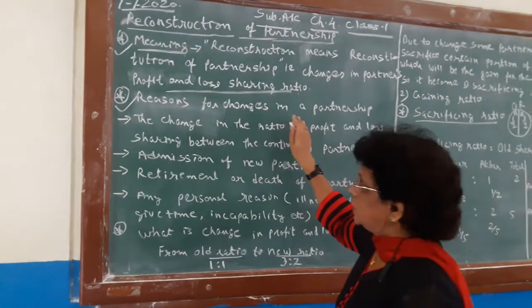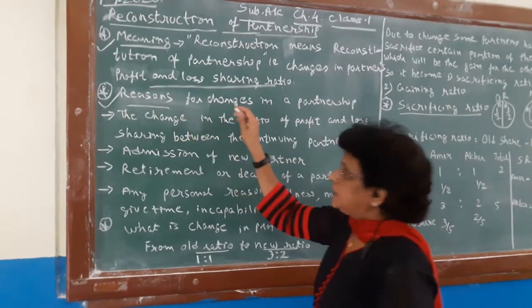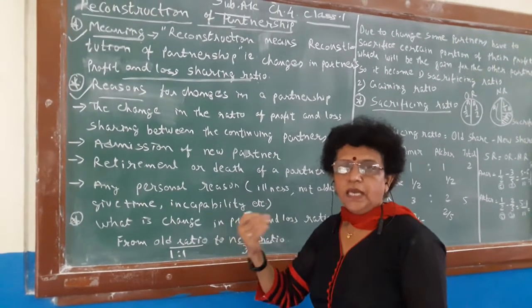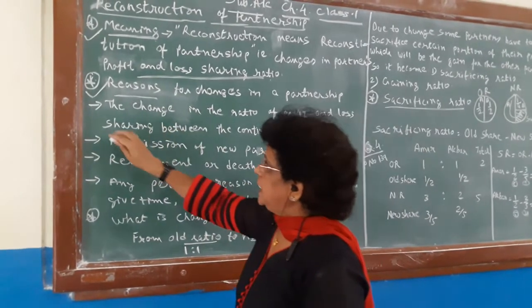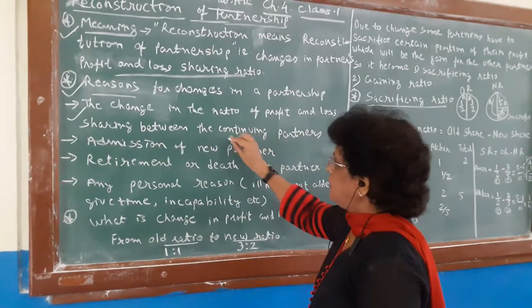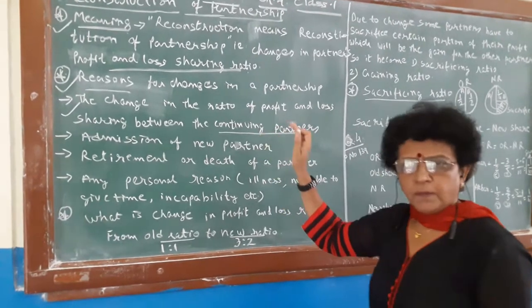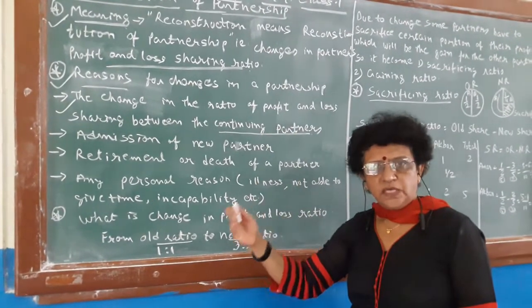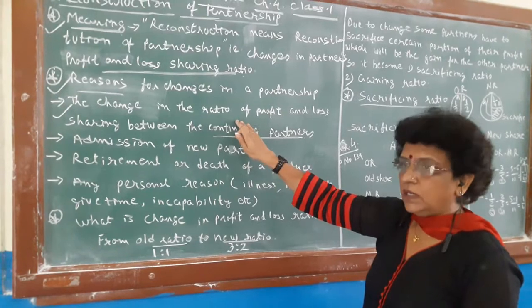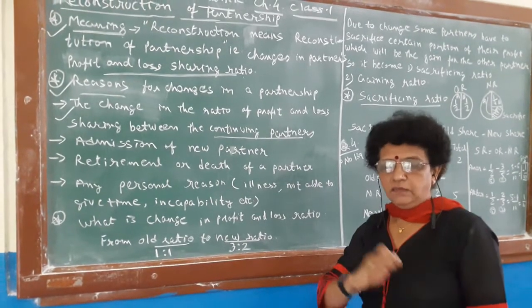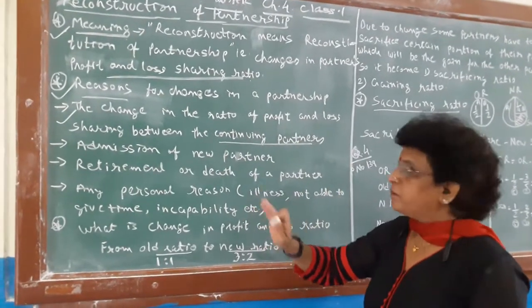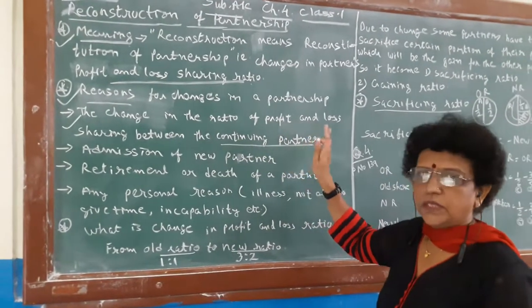Now the second point: why do you need to do so? What are the reasons that you need such change? Because in business and in life, so many changes take place and we have to adjust to those changes. The very first reason is a change in the ratio of profit and loss sharing among continuing partners. The partners are the same, but still they feel that someone is working more, giving more time, doing more efforts, so they should get more. There is no increase or decrease in the number of partners, but only the profit sharing ratio is going to change.